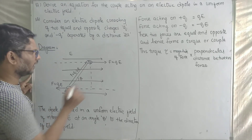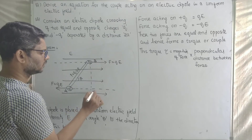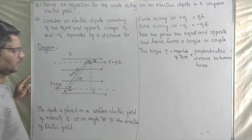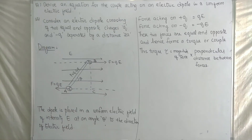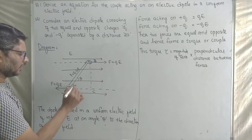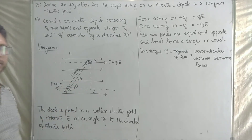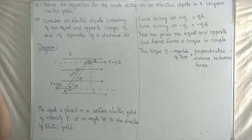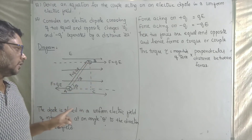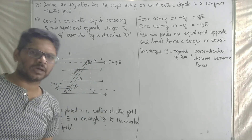To find the perpendicular distance, consider triangle ABC. We need the value of BC. The angle theta is the angle between the dipole and the electric field.